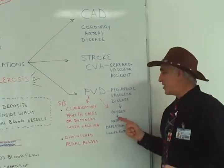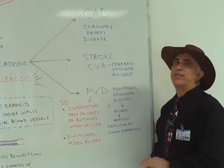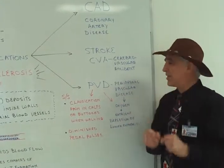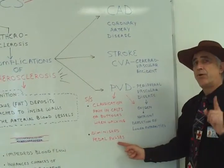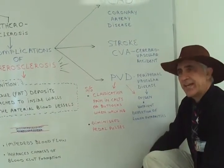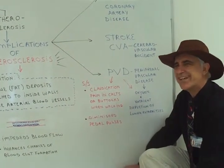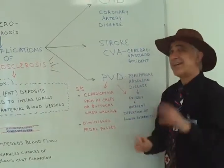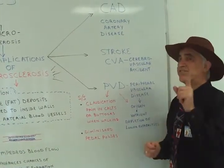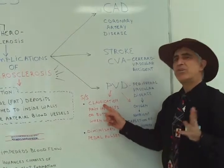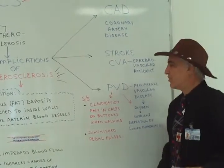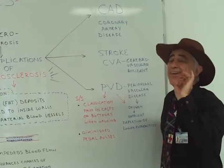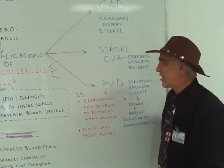When a patient has peripheral vascular disease, the oxygen and nutrients to the lower extremities are diminished. A couple of indicators would be diminished pedal pulses — you take the pulse and notice it's not very strong, meaning the blood's not getting there. Another sign or symptom would be claudication: you go for a walk and start to feel pain in the calf muscles or maybe in the buttocks — that's an indicator, and not a good sign.